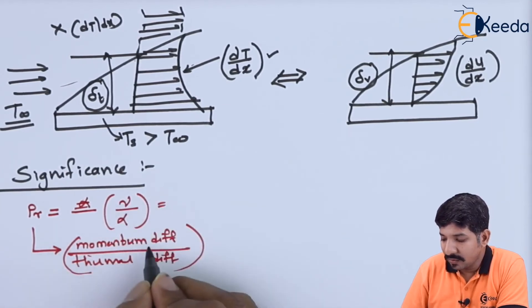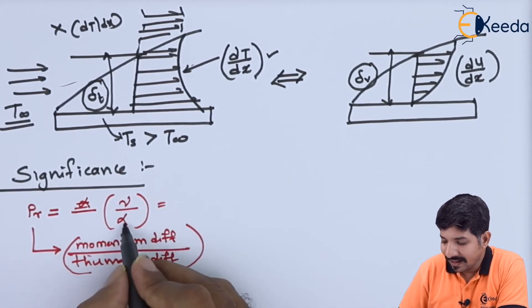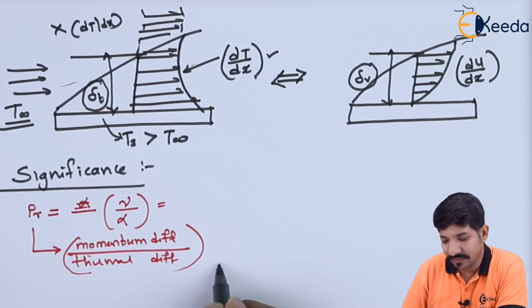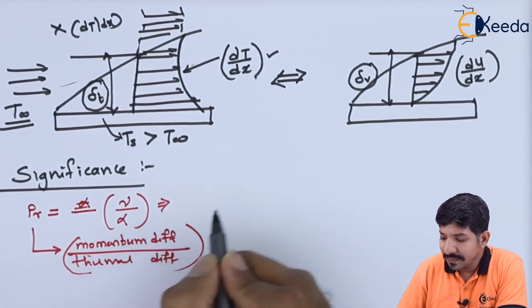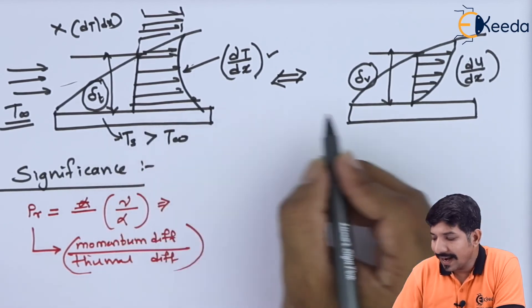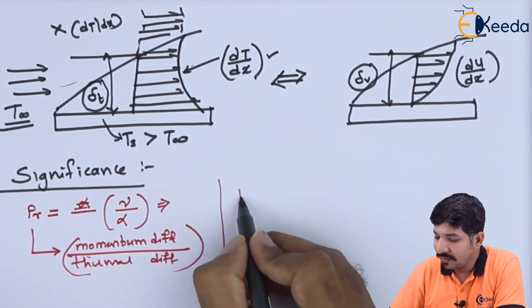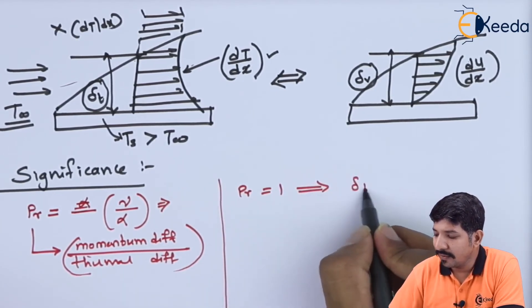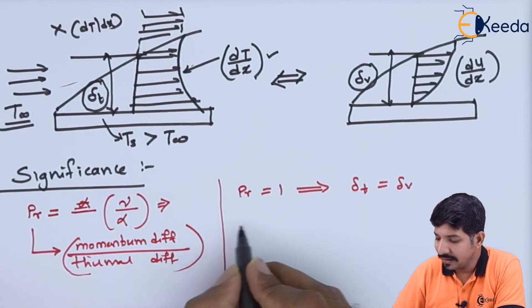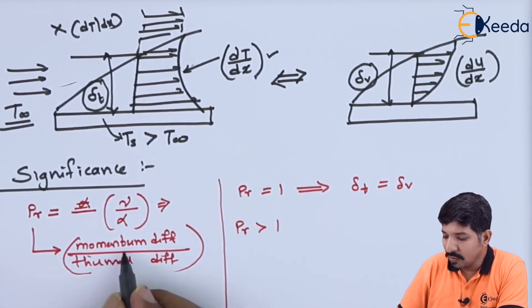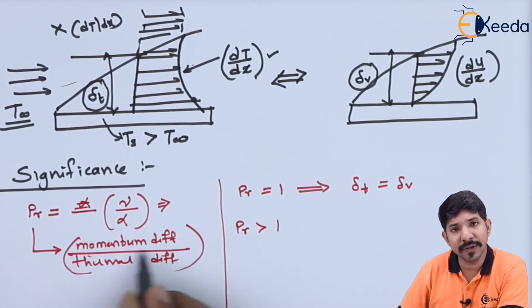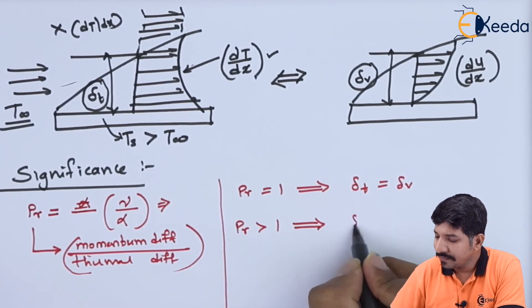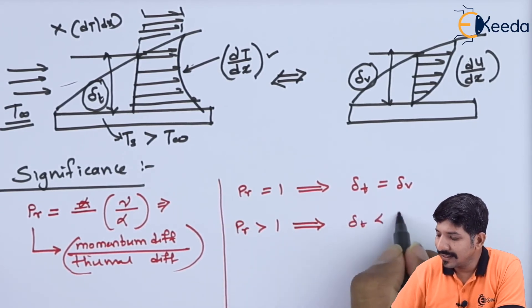Kinematic viscosity talks about how momentum is transferred and alpha talks about how thermal energy is transferred. This Prandtl number basically relates the velocity boundary layer to the thermal boundary layer. If the Prandtl number is one, then the thermal boundary layer is the same as the velocity boundary layer. If the Prandtl number is more than one, the momentum diffusivity is higher compared to the thermal diffusivity, and in that case delta T is lower than delta V.